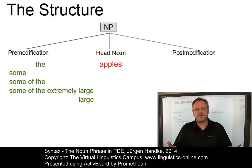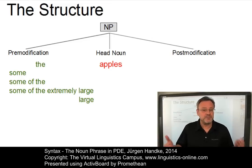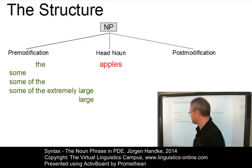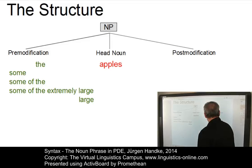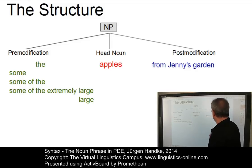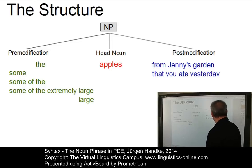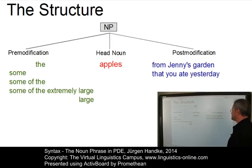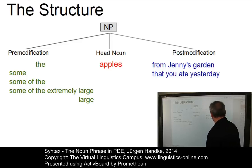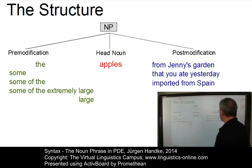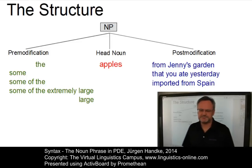Following the head noun, we can have several types of post-modification. Here are some examples: 'The apples from Jenny's garden' — here we have a prepositional phrase. 'The apples that you ate yesterday' — this is a relative clause. And here we have a non-finite clause: 'The apples imported from Spain'.